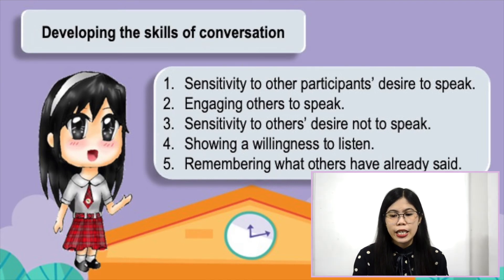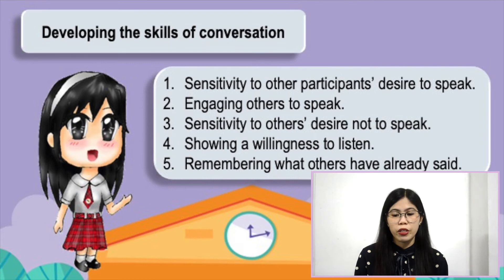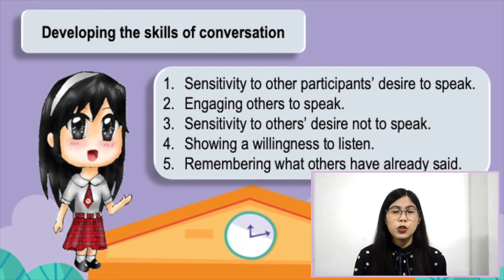Number two is engaging others to speak. Not all people are confident enough to speak or voice out what they feel and think. As an individual, you can help them by asking them what they can say on a particular topic. This will serve as the fastest way to make a shy person speak.